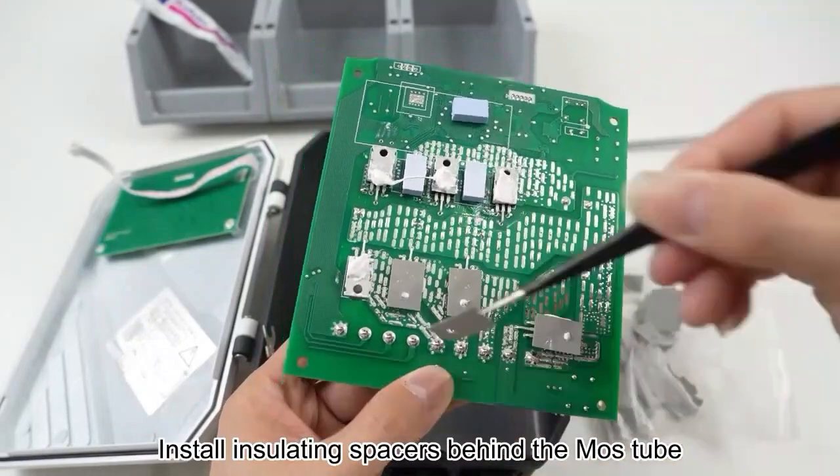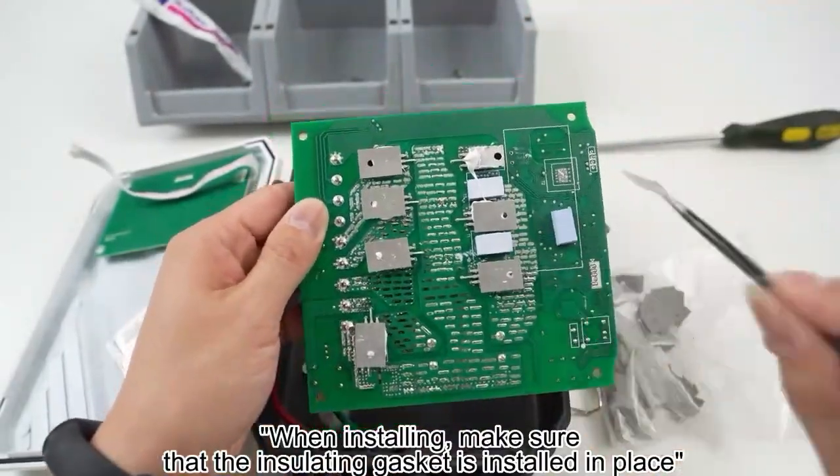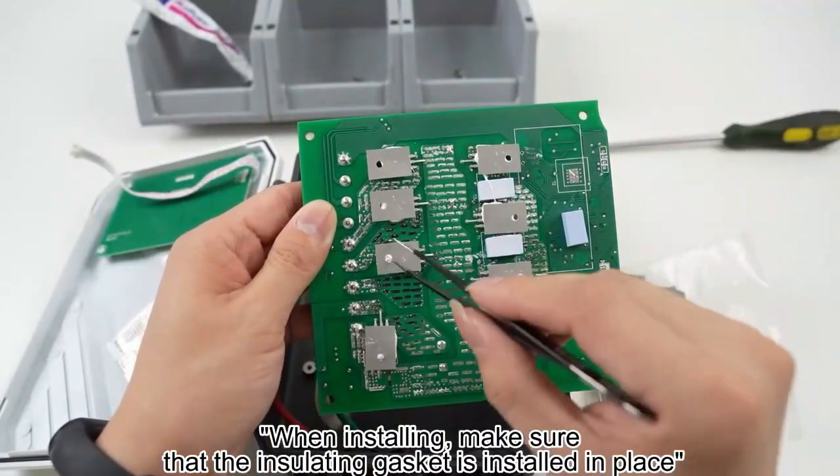Install insulating spacers behind the MOS tube. When installing, make sure that the insulating gasket is installed in place.